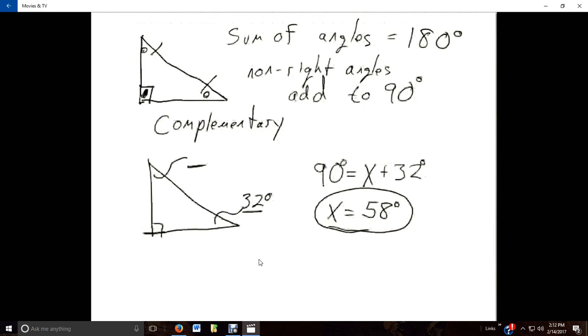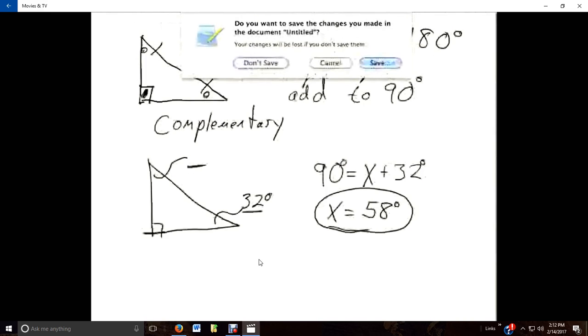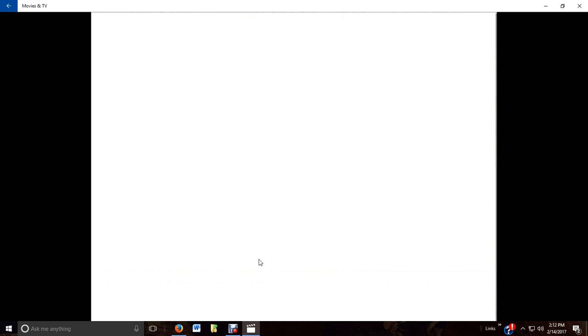So that's our first reminder I wanted to go over with triangles. There's another important fact on any triangles and it works with right triangles as well. And that is the correspondence between the sides and the angles. On a right triangle, the right angle must be the largest angle.